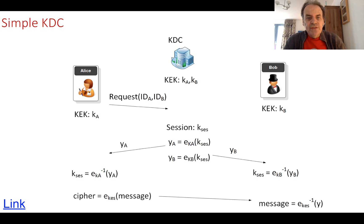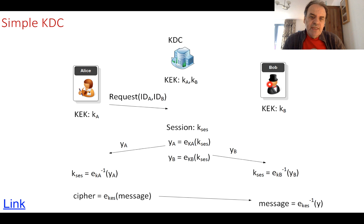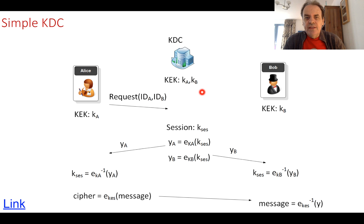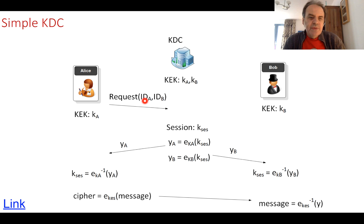Let's look at a simple example of a key distribution exchange. We have two long-term encryption keys: Ka for Alice and Kb for Bob. These are kept as long-term keys — refreshed after a certain time, but generally stable — and must be kept securely on the devices or with the users and also with the KDC. When Alice wants to speak to Bob, she sends a request with her own identity and the identity of Bob. Bob's identity is then matched to his key, and also to Alice's key.